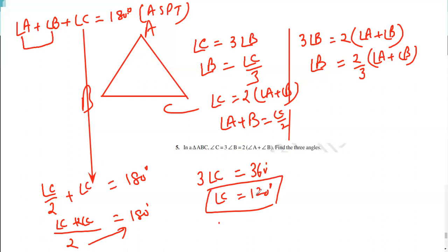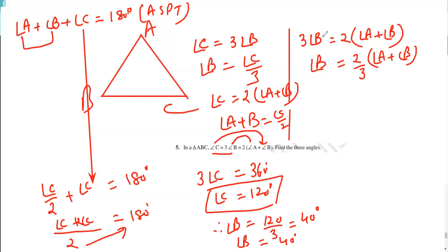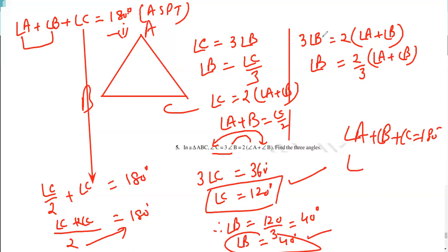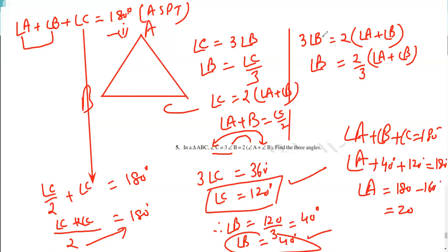The value of angle C is 120 degrees. Angle B is equal to 120 divided by 3, which is equal to 40 degrees. So we get angle C equal to 120 and angle B equal to 40. Using the angle sum property, angle A plus angle B plus angle C equals 180. Since B is 40 and C is 120, that gives 160, so angle A is 180 minus 160, which is equal to 20 degrees — the required answer.